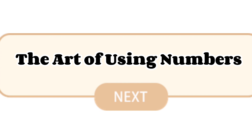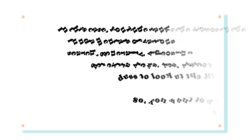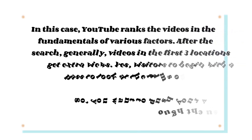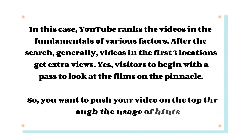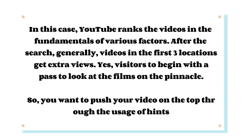Tip 3: The Art of Using Numbers. YouTube ranks videos based on various factors. After a search, videos in the first three positions generally get more views, as visitors tend to click on the films at the top. So you want to push your video to the top through the usage of effective title techniques.